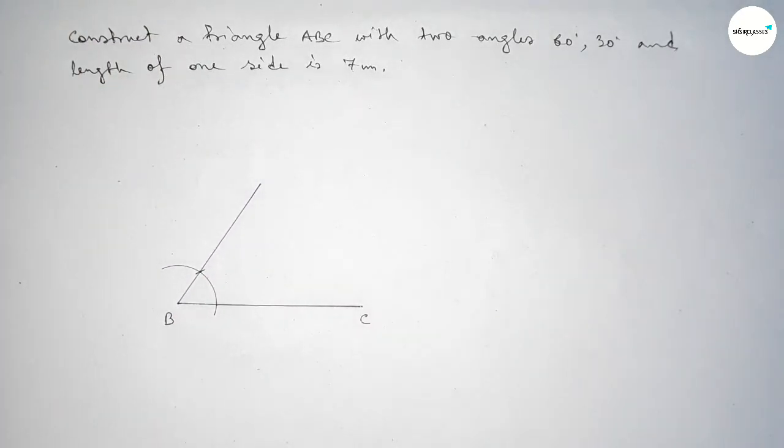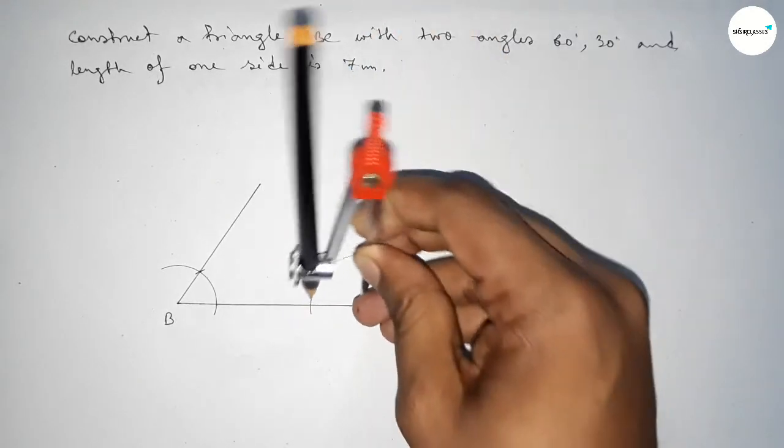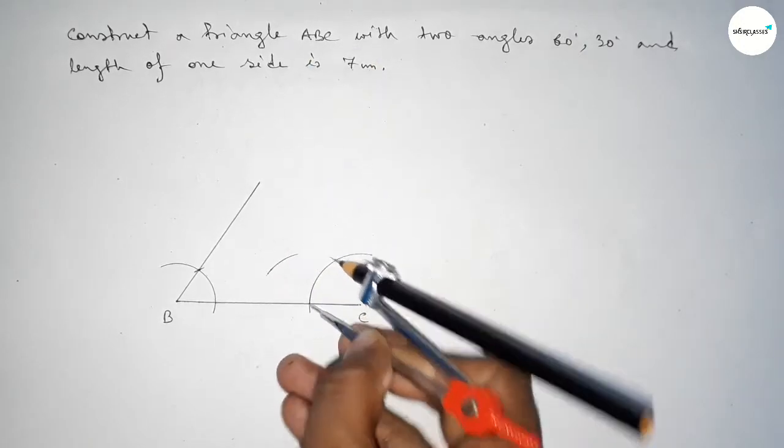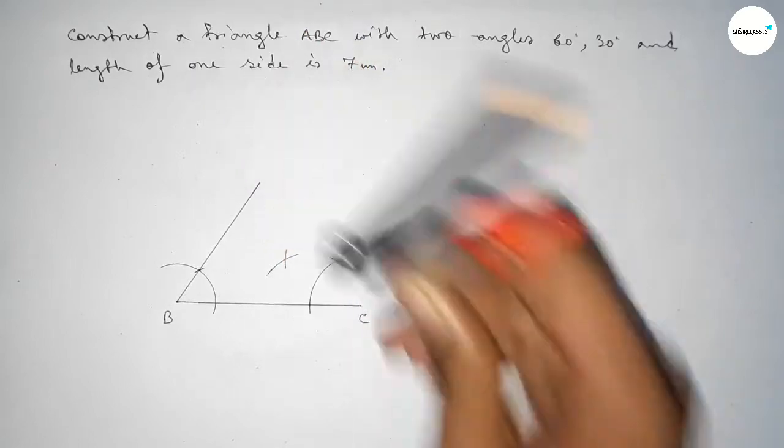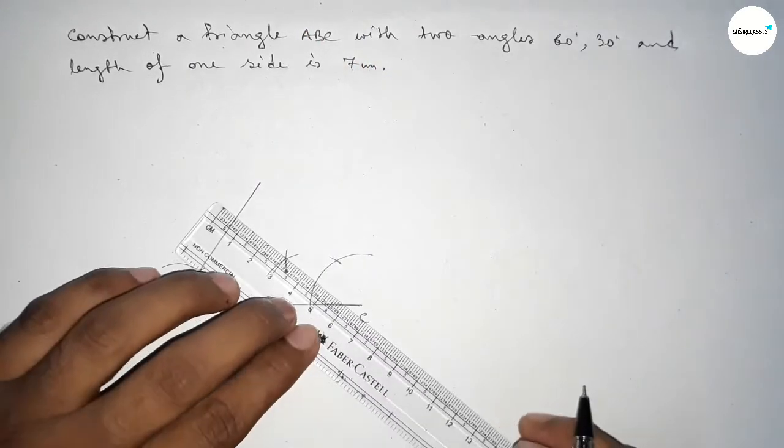Now drawing 30 degree angle on the point C. So putting the compass here and drawing an arc with same length, and putting the compass here drawing an arc here and cut here with same length, and putting the compass here and cut here. So both the curves intersect at a point. Now joining this to get here a 30 degree angle.